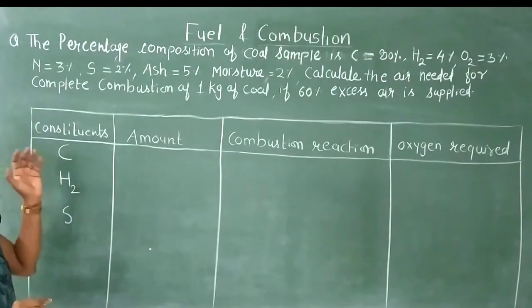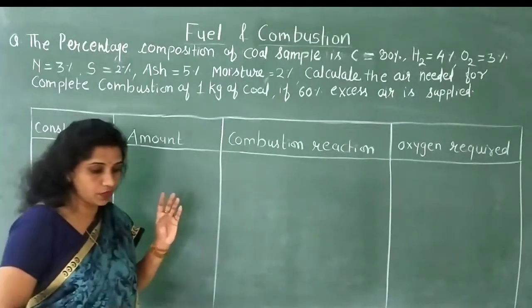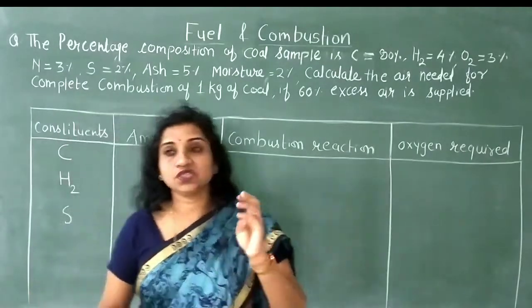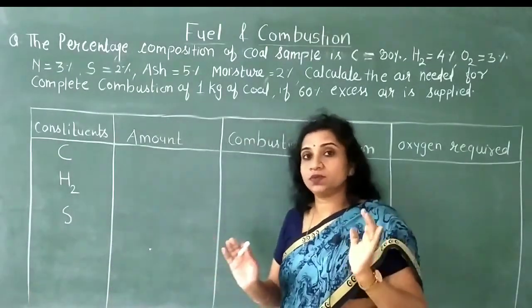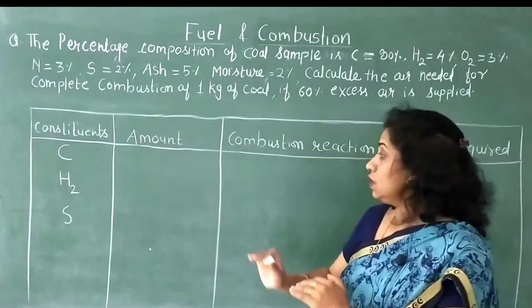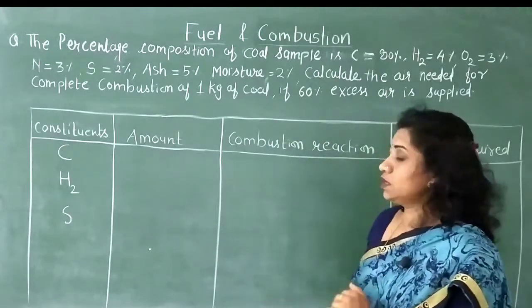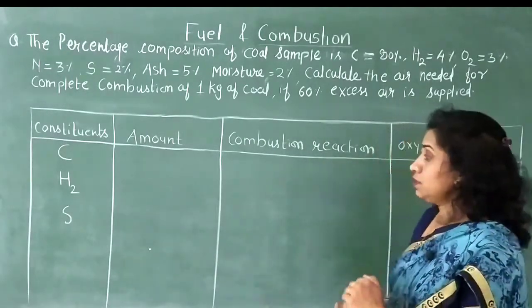Ash and moisture are non-combustible. So Nitrogen, Ash, and Moisture — none of these undergo any combustion. For this reason, we do not consider them in the calculation.